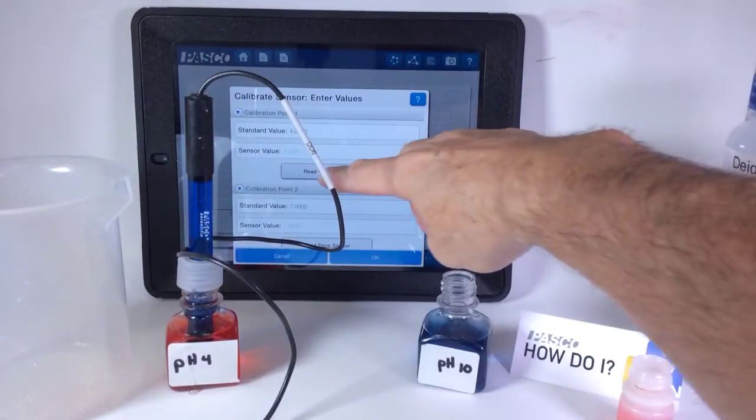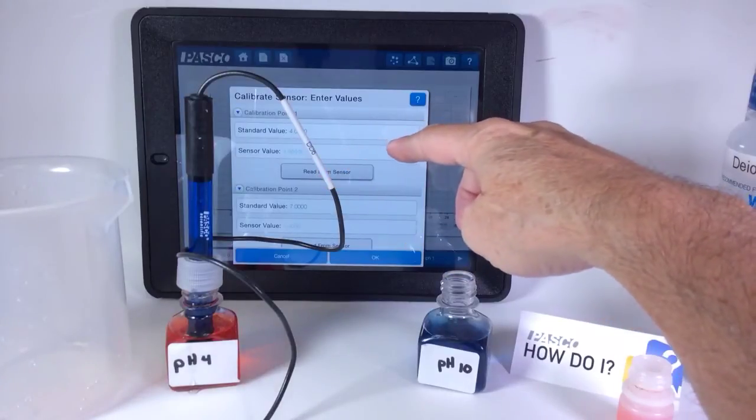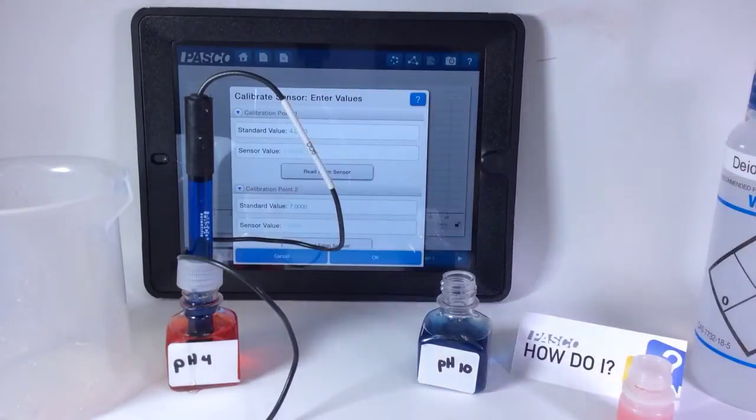Let it set for a moment, and then hit read from sensor. It now knows that one is a pH 4.